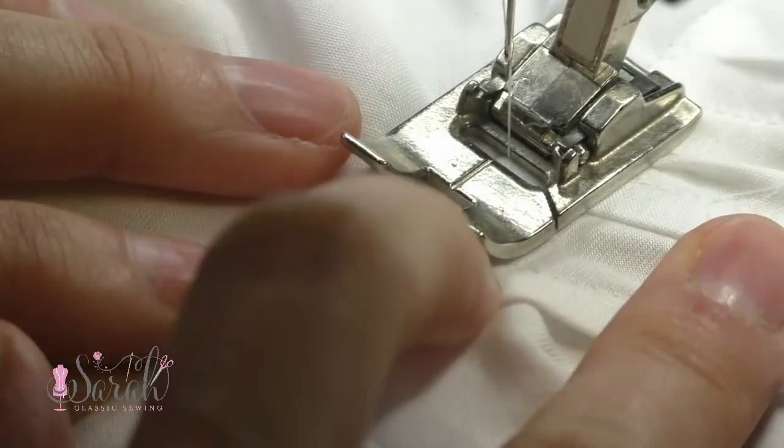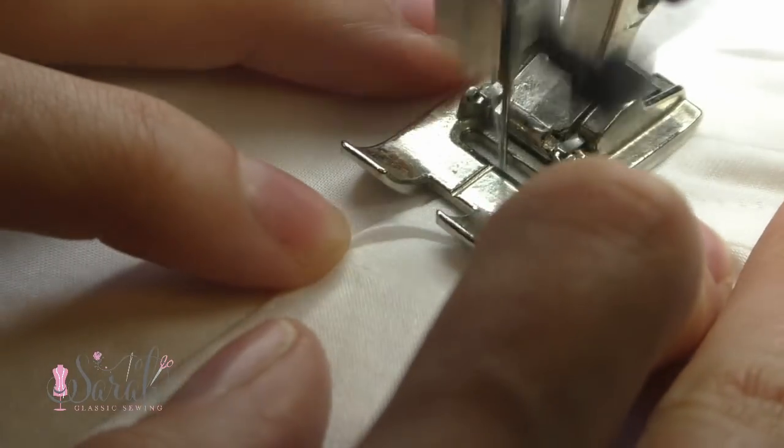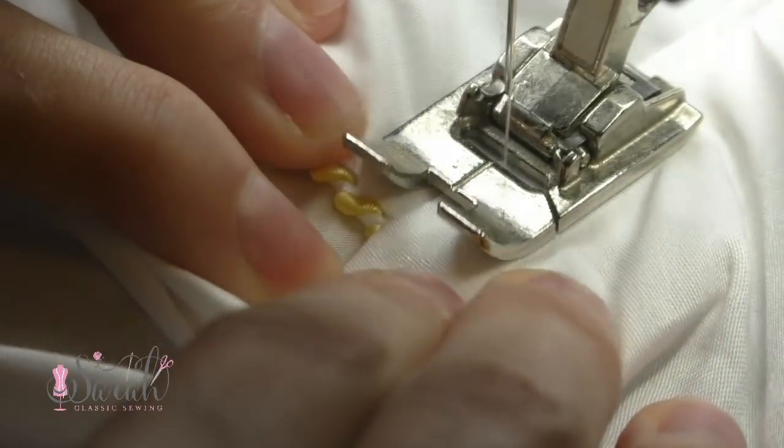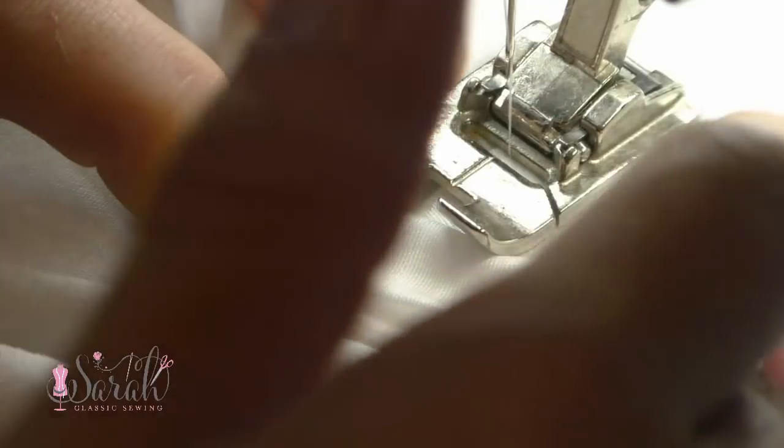Understitching helps prevent your lining from popping back at you. It's also helping everything to lay nicely with this collar. It's gotten slightly bulky, and the understitching just really helps things settle into place.